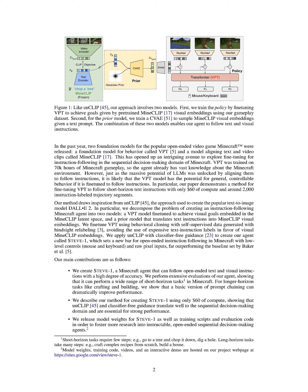We break down the problem of creating an instruction-following Minecraft agent into two models: a VPT model fine-tuned to achieve visual goals embedded in the MineClip latent space, and a prior model that translates text instructions into MineClip visual embeddings. We fine-tune VPT using behavioral cloning with self-supervised data generated with relabeling, avoiding the use of costly text instruction labels in favor of visual MineClip embeddings. We apply UnClip with classifier-free guidance to create our agent, which sets a new standard for open-ended instruction following in Minecraft with low-level controls and raw pixel inputs, significantly outperforming the baseline.